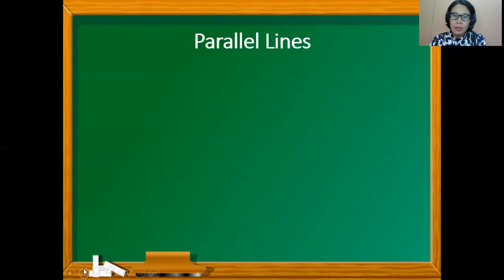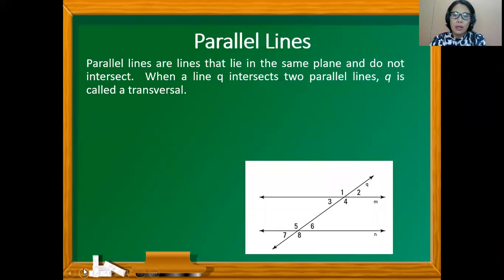Parallel lines are lines that lie in the same plane and do not intersect. When a line Q intersects these parallel lines M and N, Q is now called the transversal line.